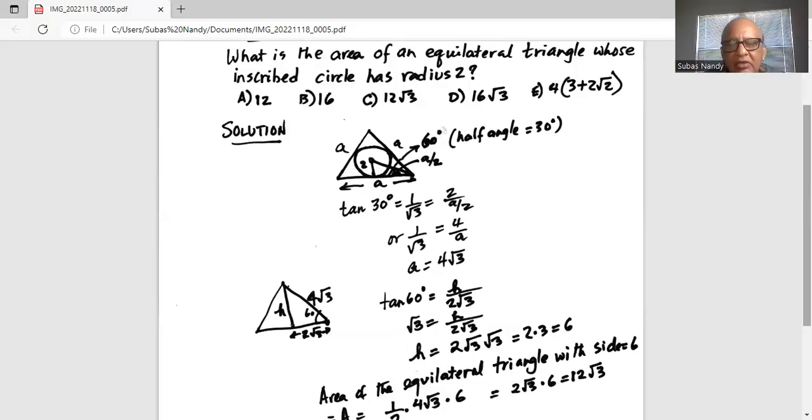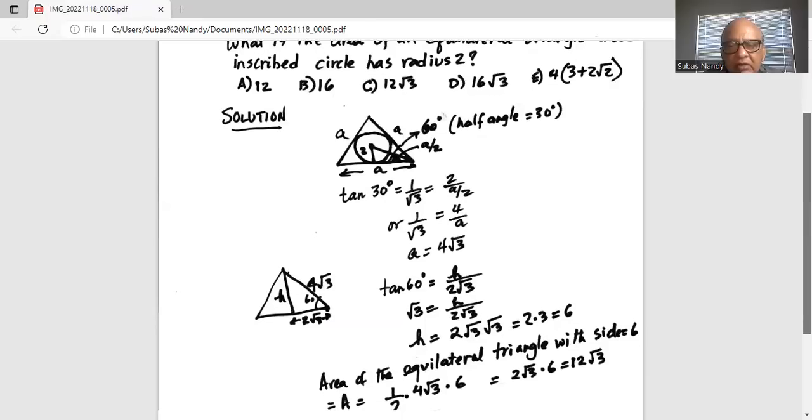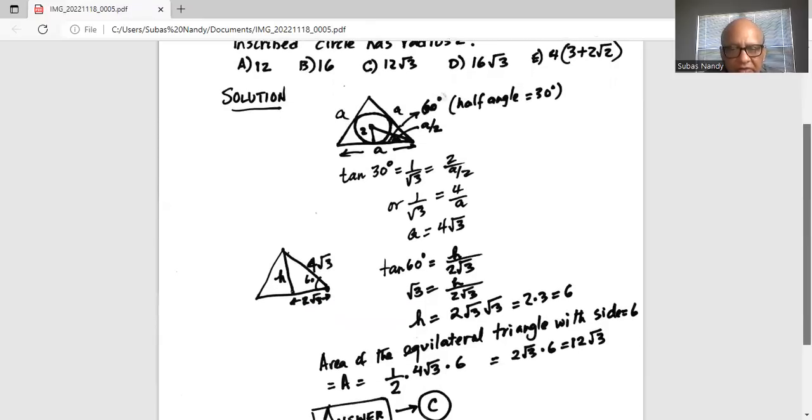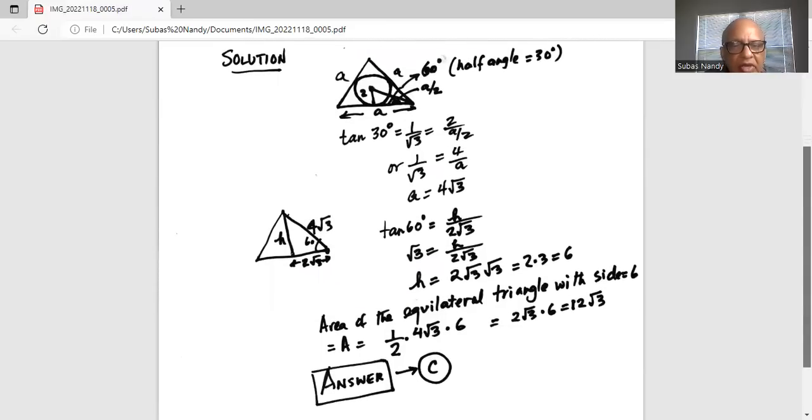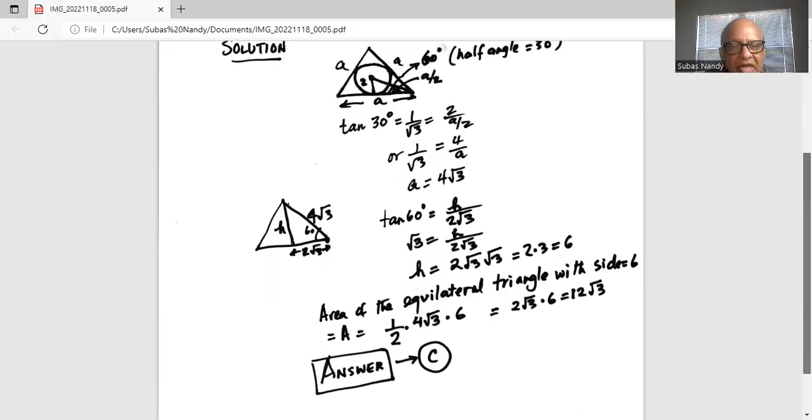So the height of the equilateral triangle or altitude is six, and its base, the length of each side as we determined in the first step, is four square root of three. Hence the area of the equilateral triangle is half base, which is four square root of three, multiplied by the altitude or height, which is six.